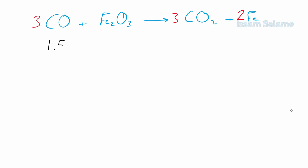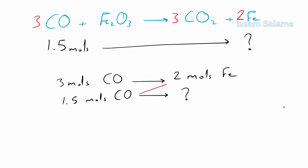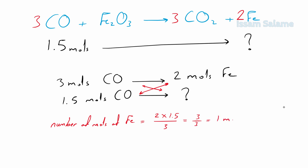Imagine that you have 1.5 moles of carbon monoxide and you want to calculate how many moles of iron are produced. We should find a relation between carbon monoxide and iron, taken from the balanced chemical reaction: 3 moles of carbon monoxide gives 2 moles of iron. So 1.5 moles of carbon monoxide gives us how many moles of iron? By cross multiplication: moles of iron = 1.5 × 2 ÷ 3 = 1 mole of iron.